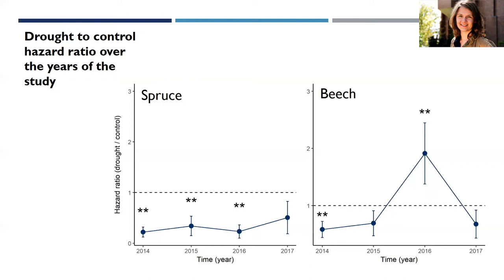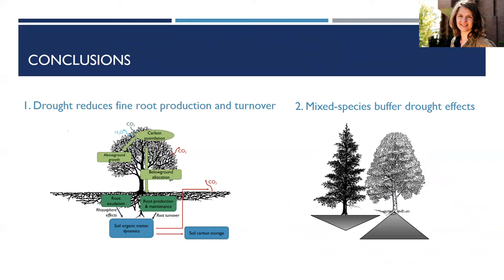What do these results mean for carbon cycling in forests? With less fine root production and existing roots living longer, there will be less fine root turnover, and the rate at which carbon is transferred to the soil organic matter pool will decrease. However, it seems that in mixed species arrangements, this negative drought effect may be mitigated to a certain extent. Especially since spruce benefits from the mixed species composition, this could be a better forest management strategy where more drought periods are expected.